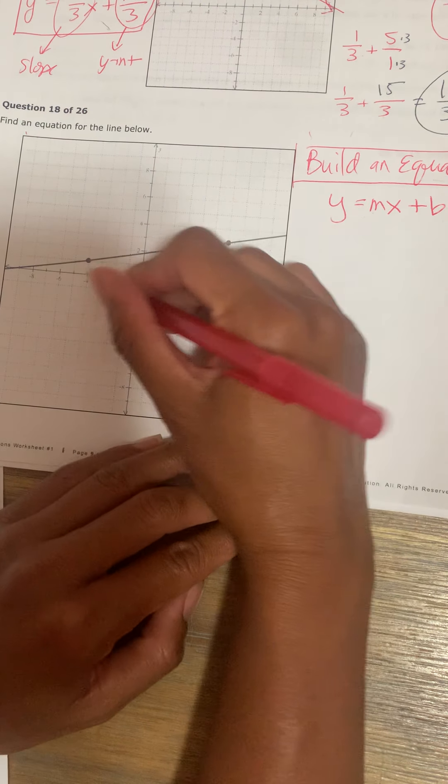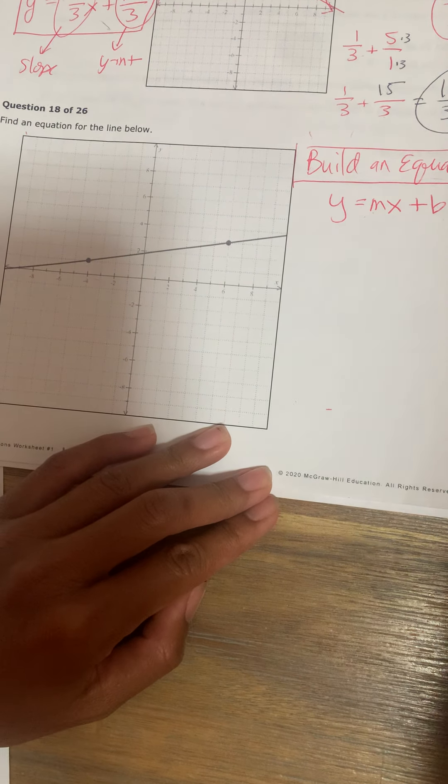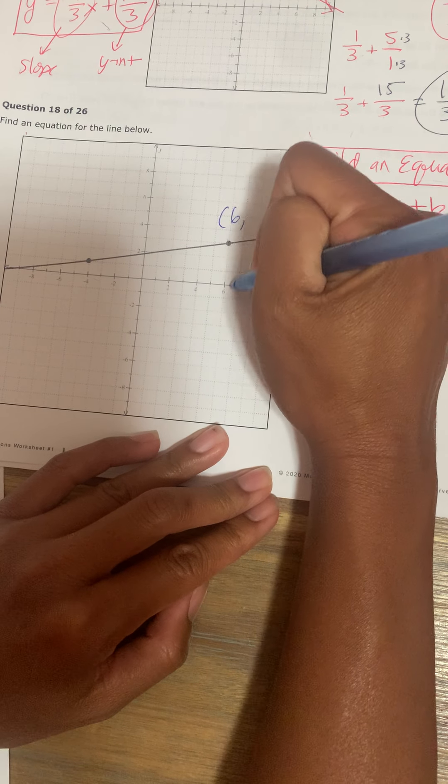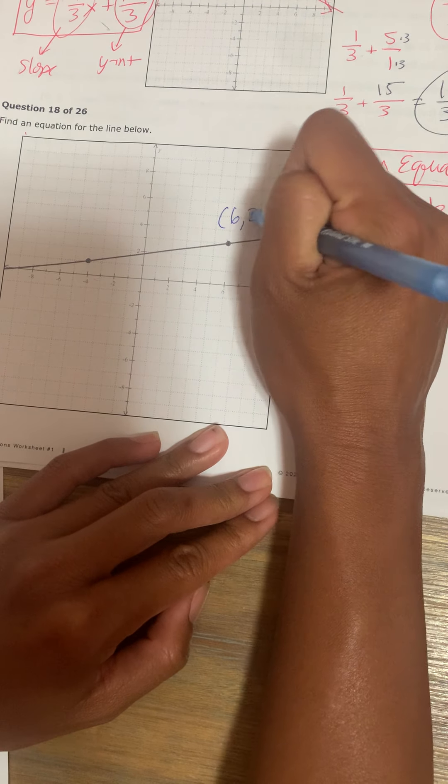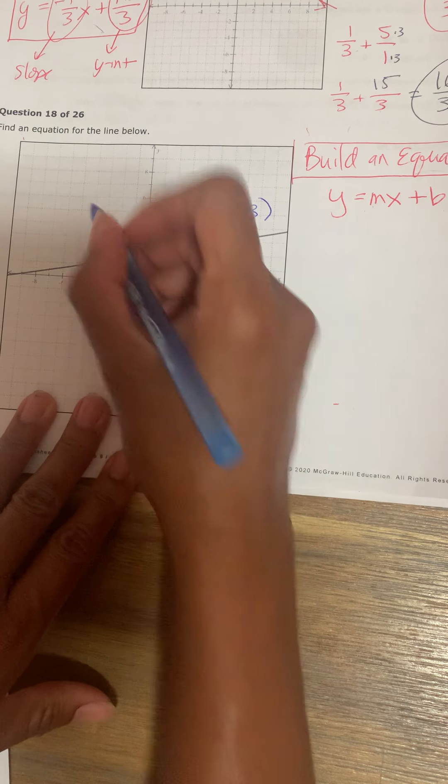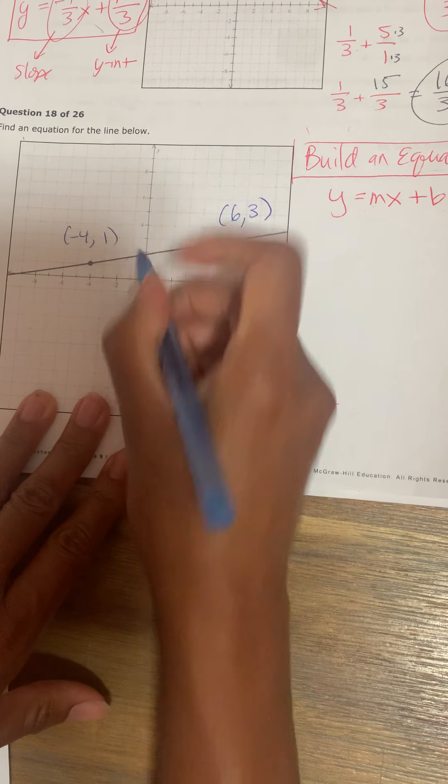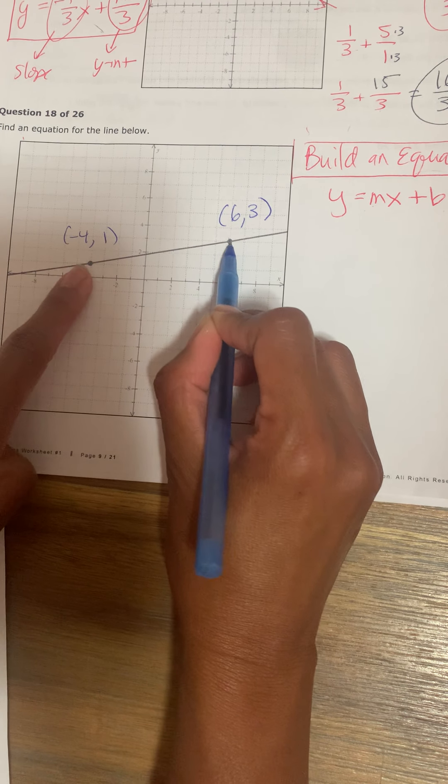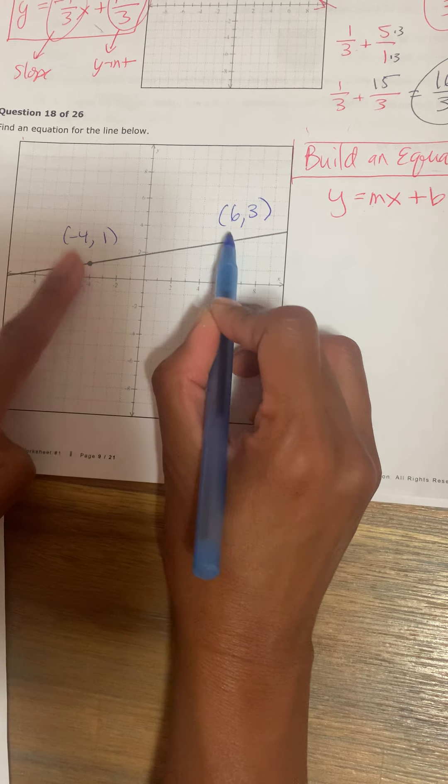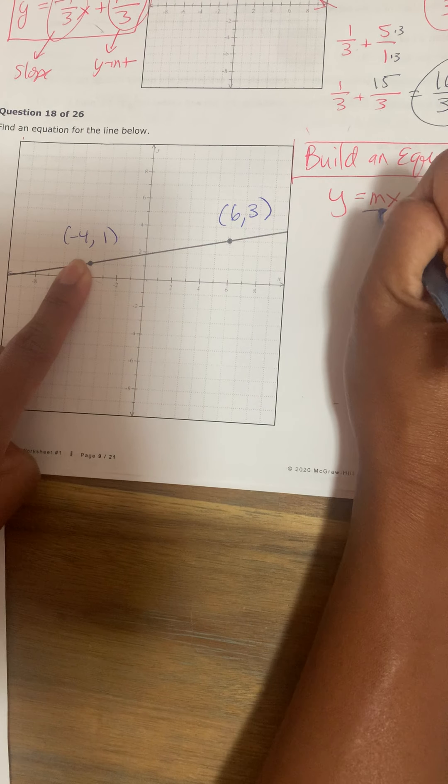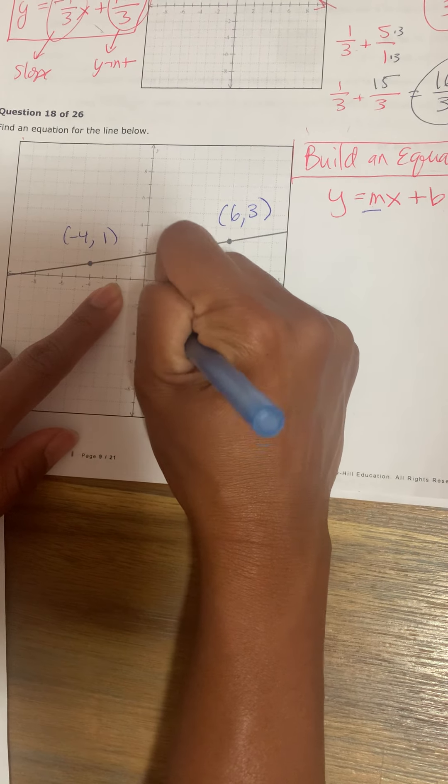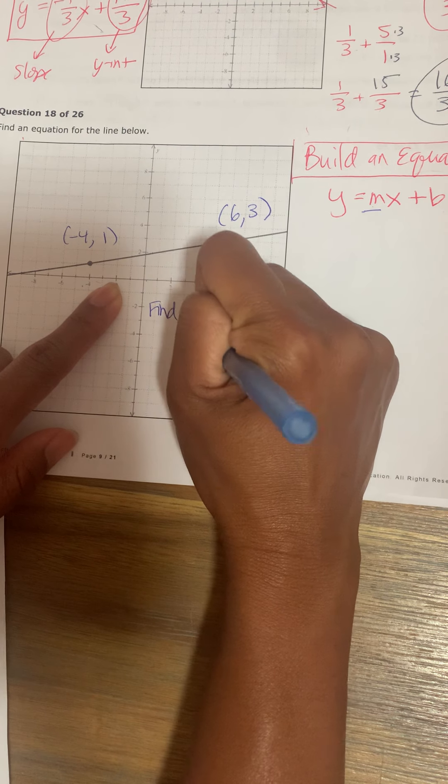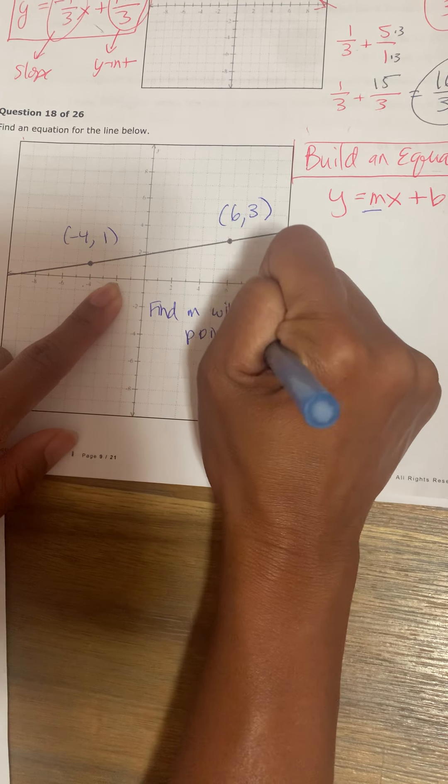If I have these two dots that are given by ALEKS, this dot here, the address of this is 6 comma 3. The address of this is negative 4 comma positive 1 because I went to the left 4 and up 1. So once I have these two points, whenever you have two points, you can always find the slope.